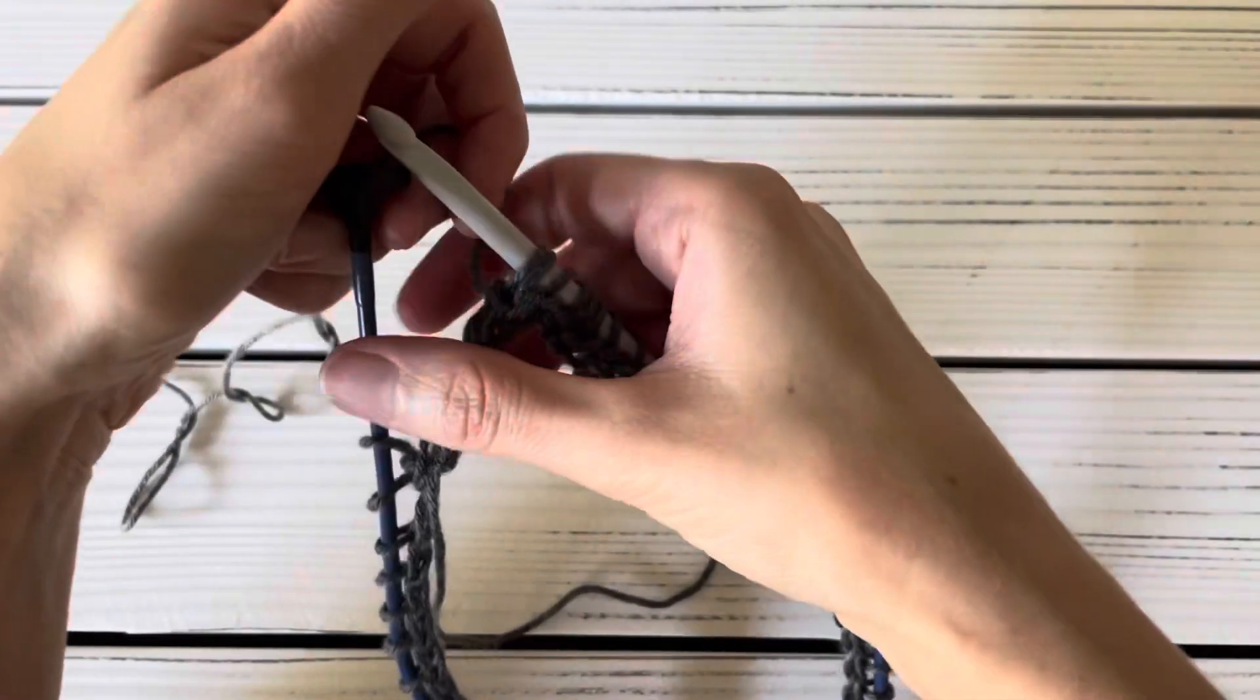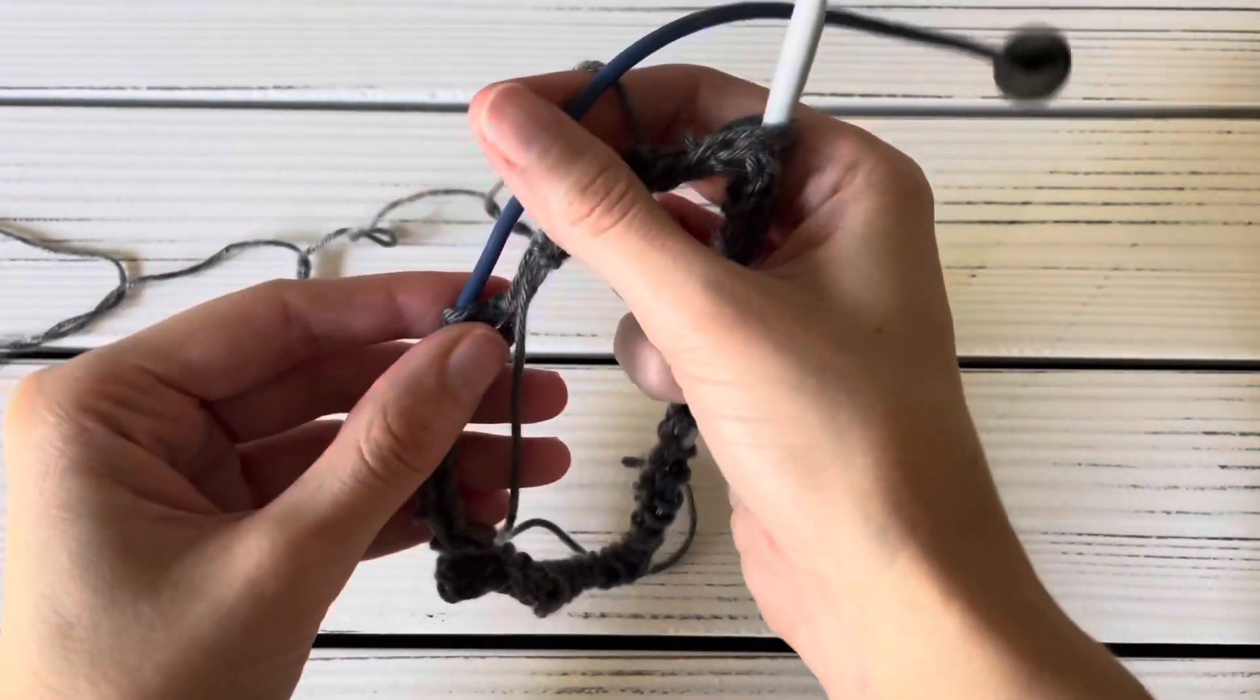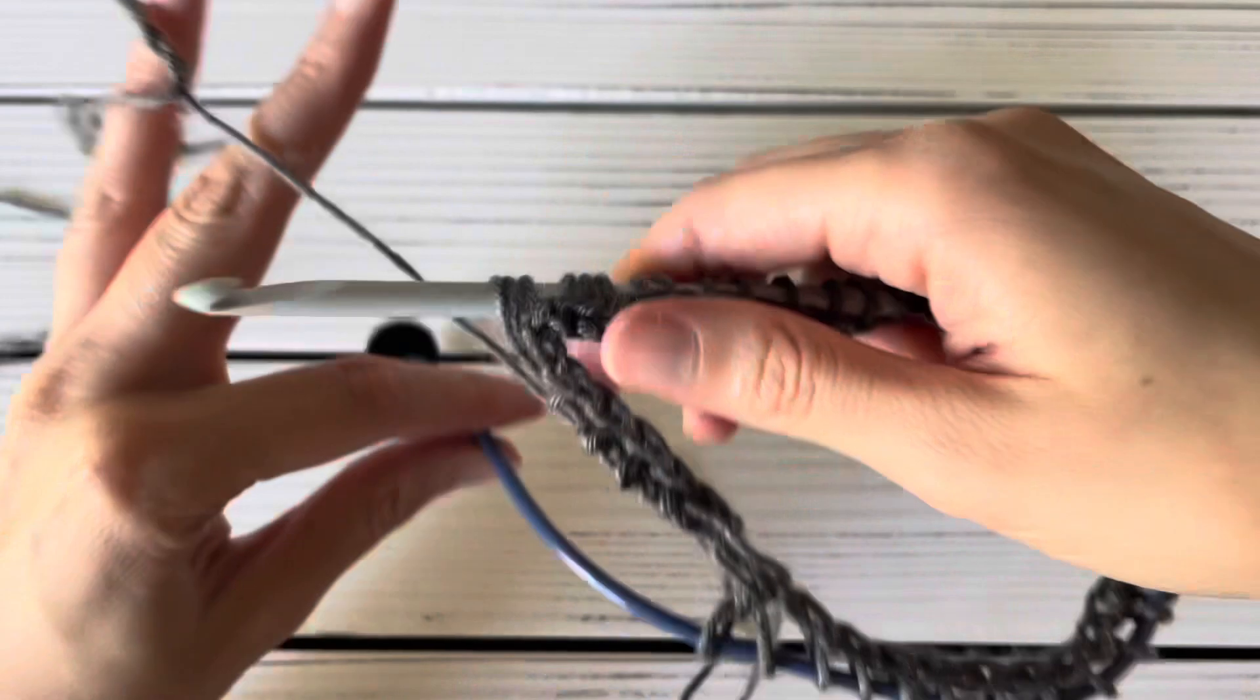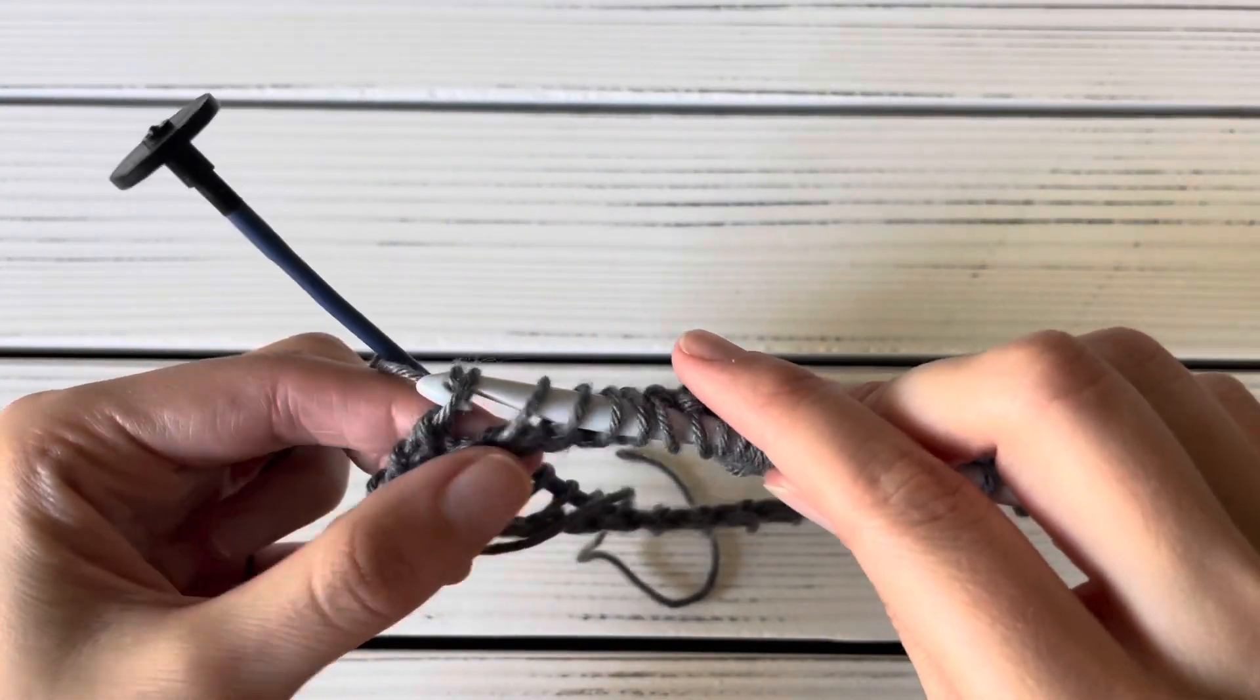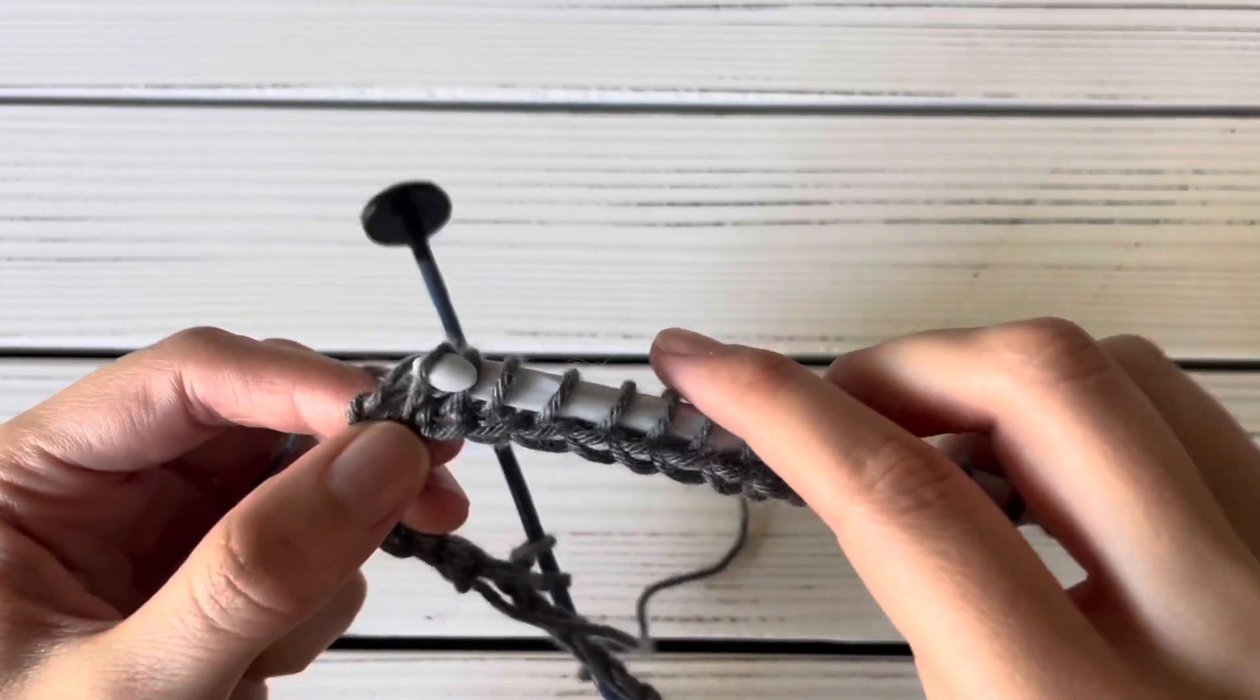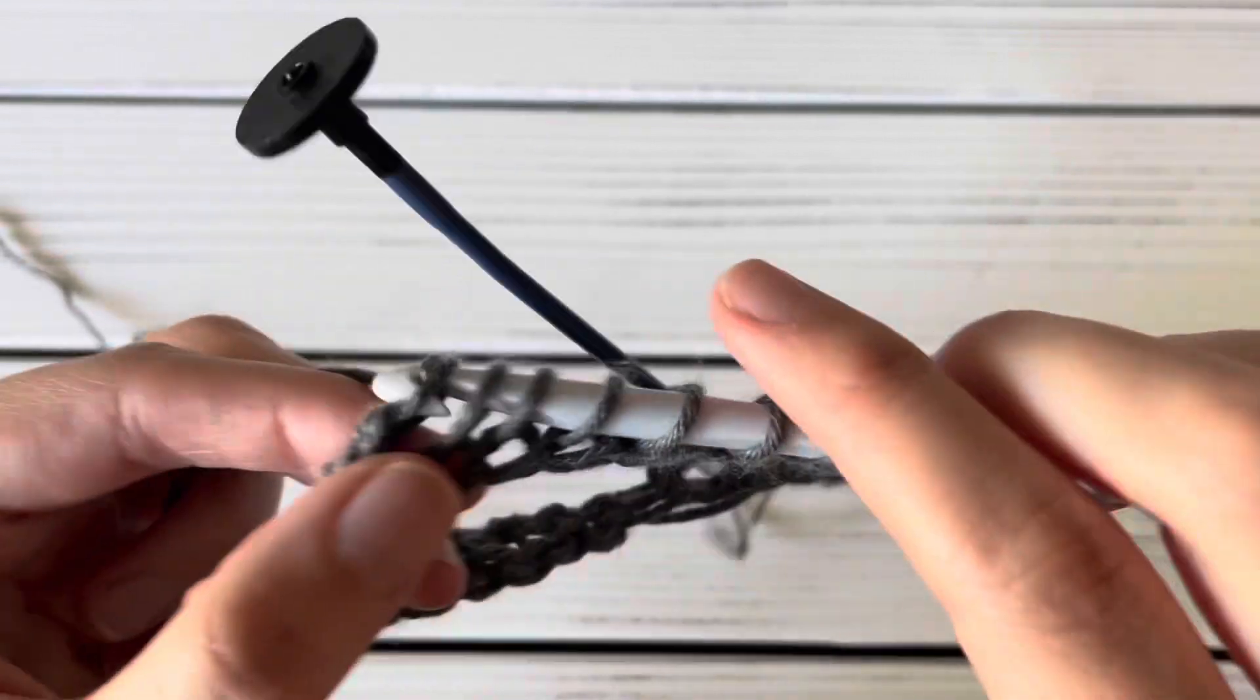Sometimes you need to arrange the stitches when the tension becomes a little tight to loosen things up so you can easily continue working the return pass, depending on the size project you are making. So just continue yarning over and pulling through two.